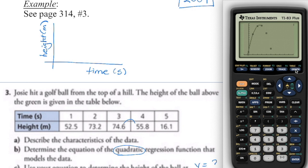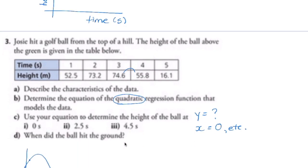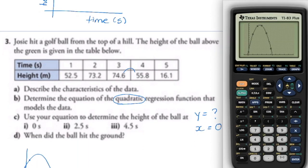If you have a TI-84 with the newer interface, go down to 'Store Regression Equation' — that's where you do the vars part. Once you have the equation, write it down before you get too far along. Then figure out parts A and B using that function.